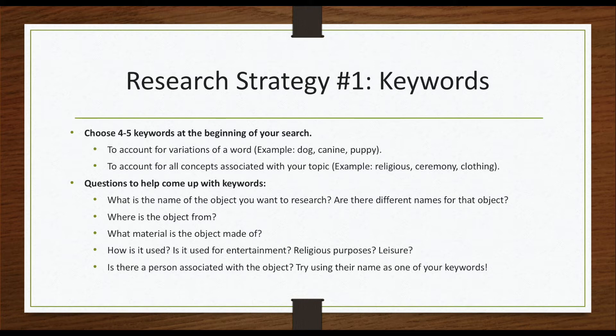Still don't know where to start with keywords? Here are some questions you can ask yourself that might help. What is the name of the object you want to research? Are there different names for that object? If I am looking for clothing, maybe I can use other words like garments or textiles. And if I know the specific article of clothing, I can indicate that — something like shawl, dress, or shoes.